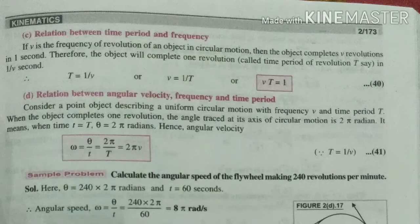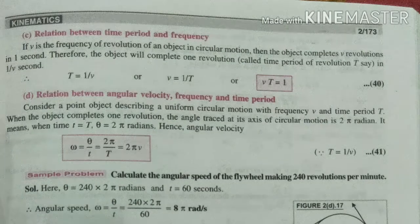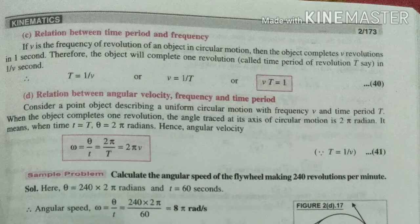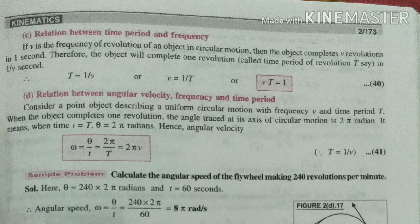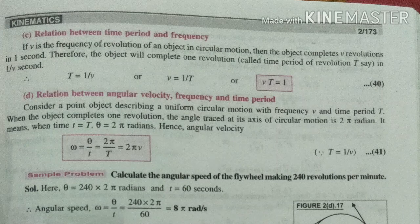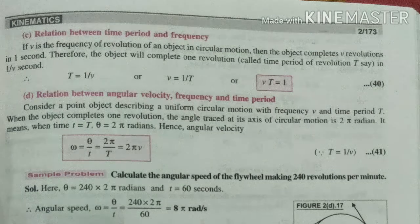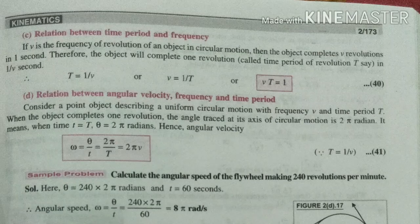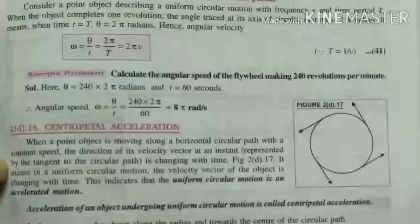Next is relation between time period and frequency. T equals one by nu, or nu equals one by T. Relation between angular velocity, frequency, and time period: omega equals theta by t. Theta equals two pi, so omega equals two pi by T, which equals two pi nu.